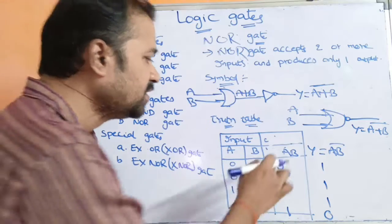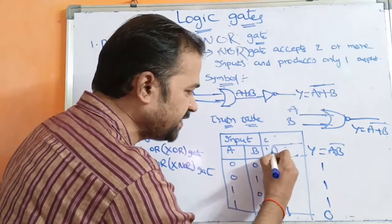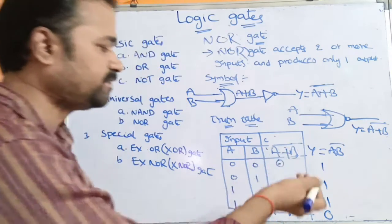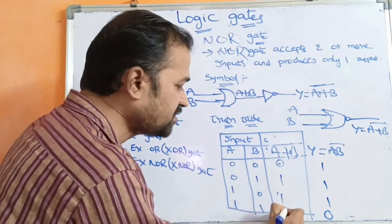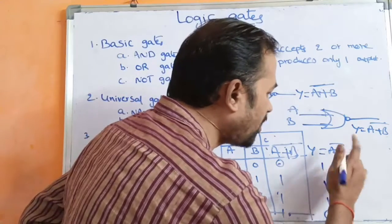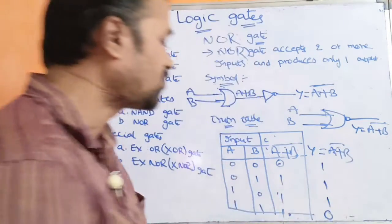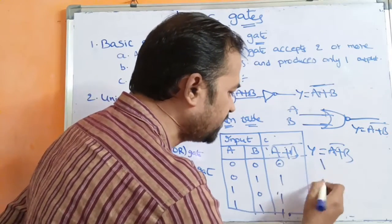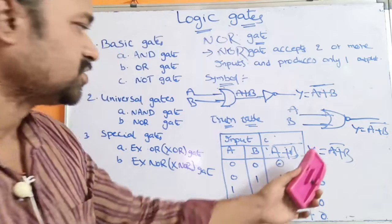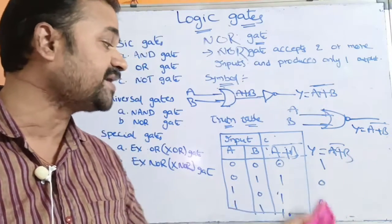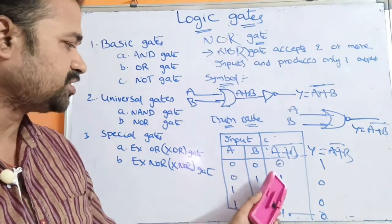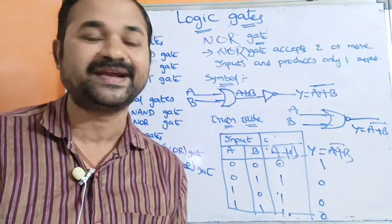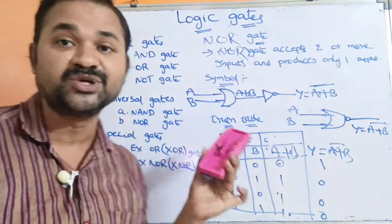Now let us see the truth table for NOR gate. First we compute A plus B: if both inputs are 0 then the output is 0; otherwise the output is 1. NOR gate gives the complement of the sum of the inputs, so 0 changes to 1 and the remaining three occasions the output is 0. So the output of NOR gate is 1, 0, 0, 0. These two gates, NAND and NOR, are called universal gates because by using them we can implement any other gate.